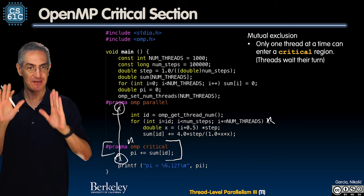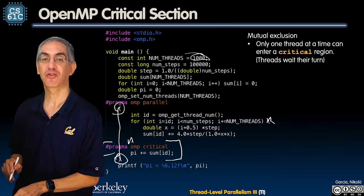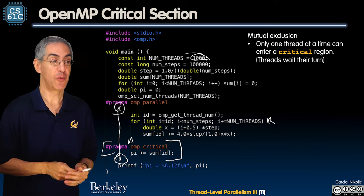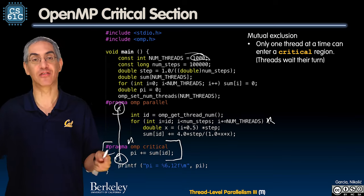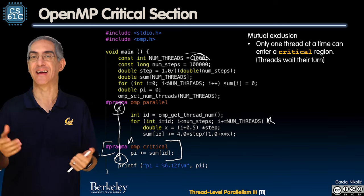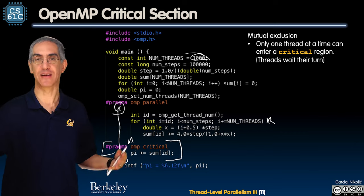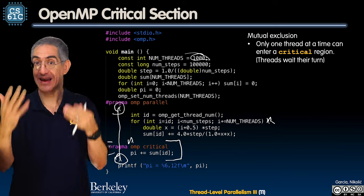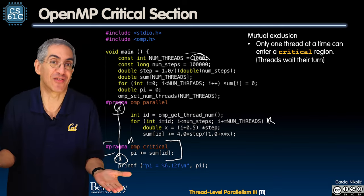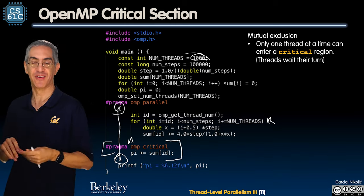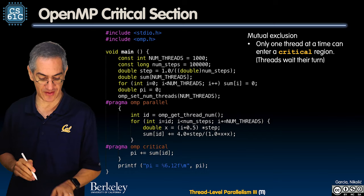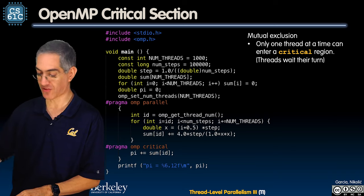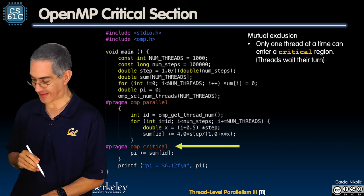We started with just a couple of threads — that was fine. Then we asked, why not have a thousand threads? At the end they all need to add their contributions, which gets annoying at scale. We deliberately introduced a race condition to teach what race conditions are, then worked back to fixing it. Now I've closed that conversation by showing how a critical section with hardware synchronization solves the problem.